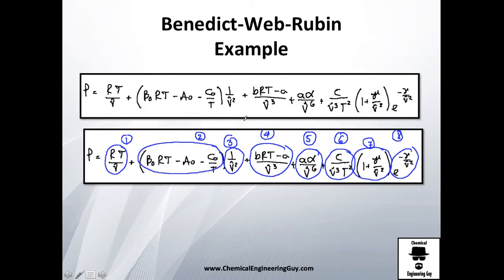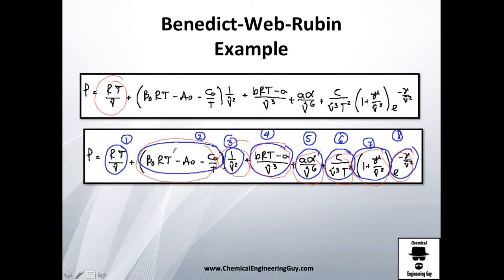The equation is huge, so I recommend breaking it down into small pieces, naming them, and then checking whether they are adding or multiplying. I label them one through eight — you can call them whatever you want, that's fine.